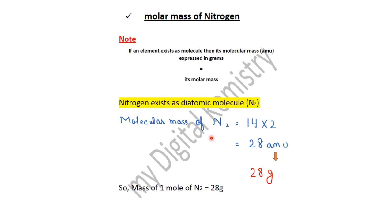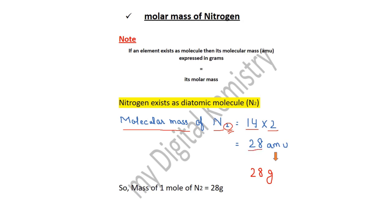Molar mass of nitrogen find out करने के लिए पहले molecular mass of nitrogen calculate करते हैं। Nitrogen का atomic mass 14 है, और यहाँ two atoms हैं, इसलिए 14 × 2 = 28 AMU। यही molecular mass of nitrogen है। जैसे ही AMU unit को grams से replace करते हैं, 28 grams = 1 mole of nitrogen। यही molar mass of nitrogen है।